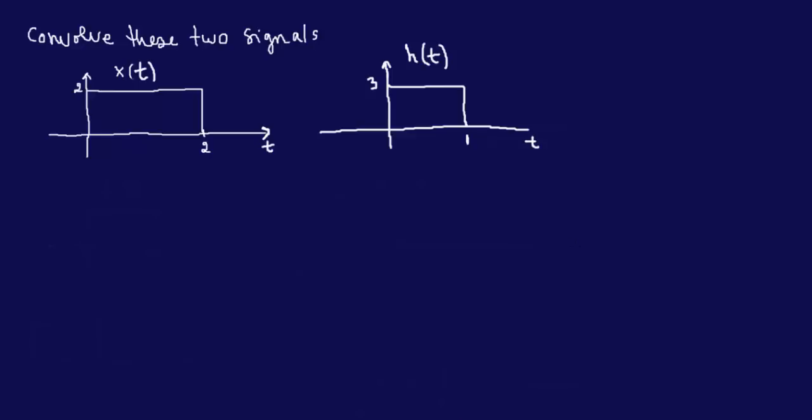Hello everyone. This is an example on convolution. Convolution is one of those gray areas that we sometimes confuse ourselves with, especially because there are a lot of steps involved and professors tend to combine those steps. This example is a typical convolution problem, and once you understand it, you'll be able to solve any other convolution problem. This is going to be a pretty long video, so bear with me — I want to include all the details and steps.